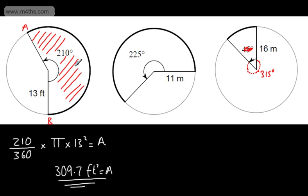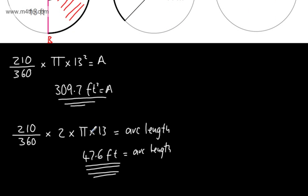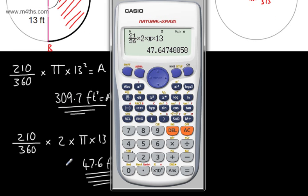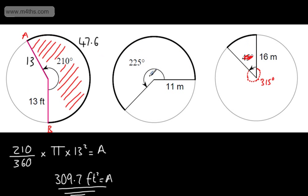If we were asked to find the perimeter of this major sector, we take the arc length and add it to both radii. The perimeter is 13 + 13 + 47.6 = 73.6 feet. For the 225° sector, it would be 225/360, and for the 45° sector, it would be 45/360.